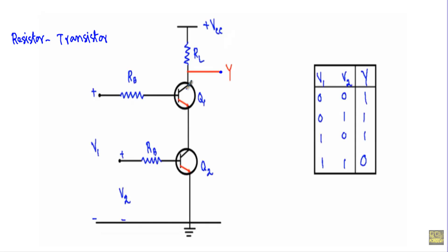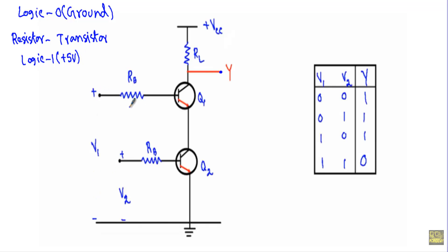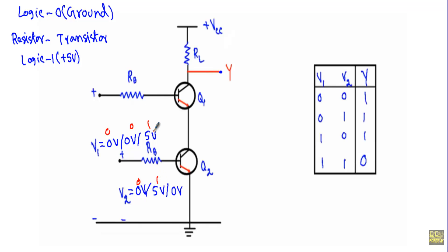I will now briefly describe the operation of this RTL NAND gate, then show the detailed operation using a simulator. Logic zero means the input terminal is connected to ground, and logic one means applying a 5-volt DC voltage at the input terminal. When V1 is zero volts and V2 is zero volts, or V1 is zero and V2 is five volts, or V1 is five volts and V2 is zero volts — these are the three cases where at least one input is logic zero.